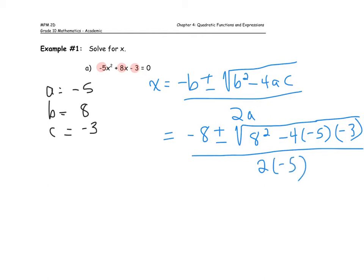I want to stop and point out where some common errors occur when using the quadratic formula. One of them often occurs in the minus 4ac part. Notice that both a and c are negative in this case, and the formula itself has a subtraction. We need to be really careful when multiplying those integers to make sure that portion has the correct sign.